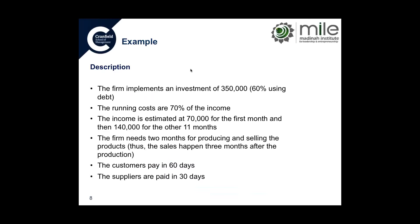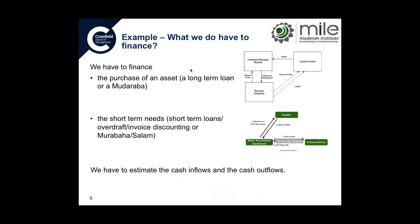The cost incurred to produce the material represents around 70% of the income from the sale of the product. All costs are paid in 30 days. The income is estimated at $70,000 in the first month, and then $140,000 from month two onwards. However, the firm needs two months to produce the product, so the first sale will happen not in month one but only in month three. Customers ask for 60 days credit, which implies the firm will be able to cash from sales only two months after the sale.